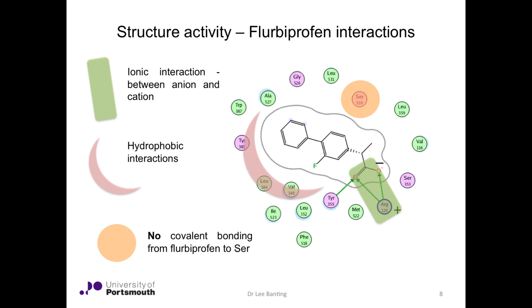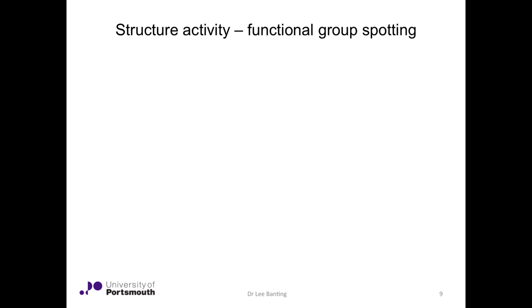There is no covalent bonding from flurbiprofen to serine, as mentioned, because there's no functional group to perform the transesterification. So it falls into a slightly different class of enzyme inhibitor.